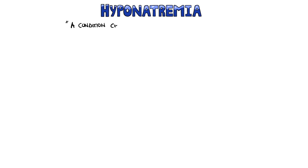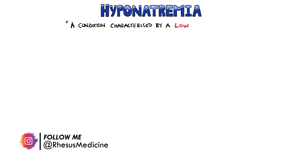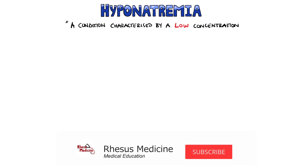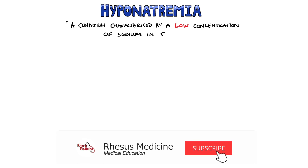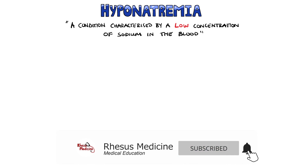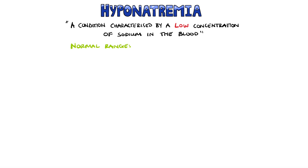Hyponatremia refers to a condition where the concentration of sodium in the blood is too low. The normal range is between 135 and 145 mEq per litre. Therefore, under 135 is considered hyponatremic,